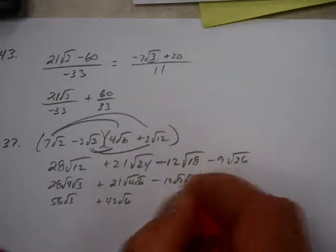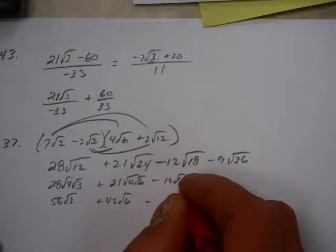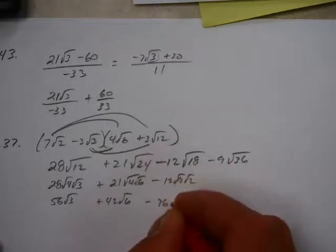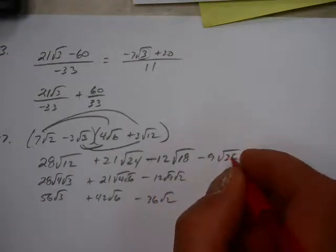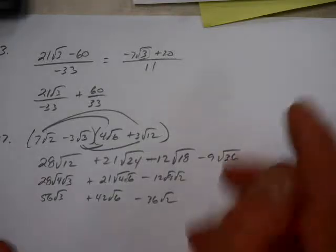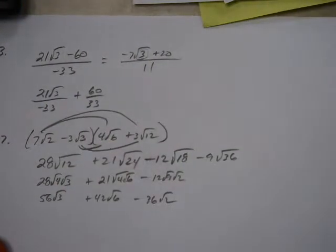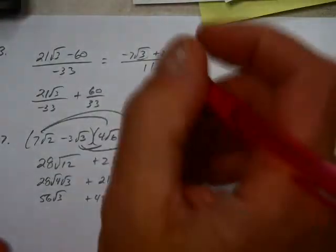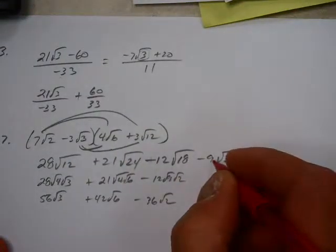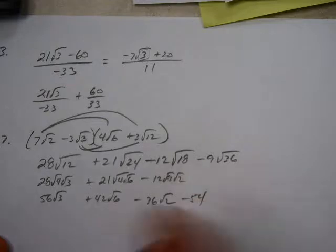Minus 12 square roots of 9, square roots of 2, which minus 3 times 12, 36 square roots of 2. This one, square root of 36 is 6. 6 times 9 minus 54.